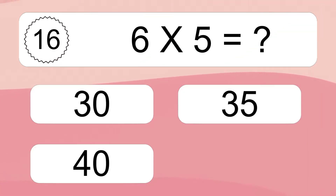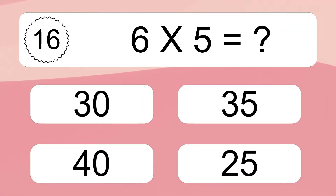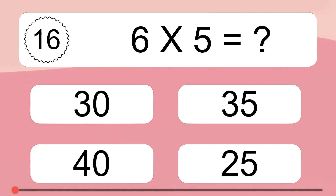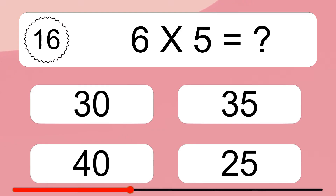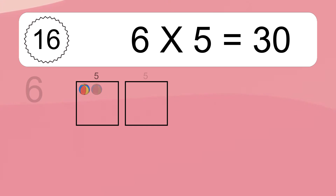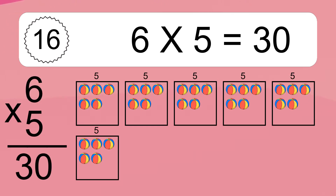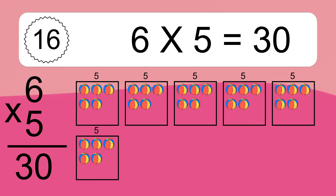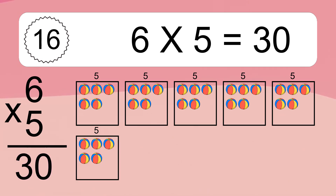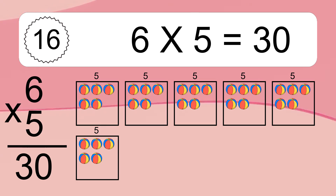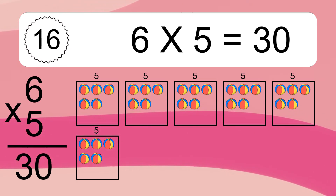Six times five equals what? Six times five equals 30. We have six boxes and each box has five colorful balls inside. If you count all the balls in all the boxes together, you will have six times five balls. This equals 30 balls.